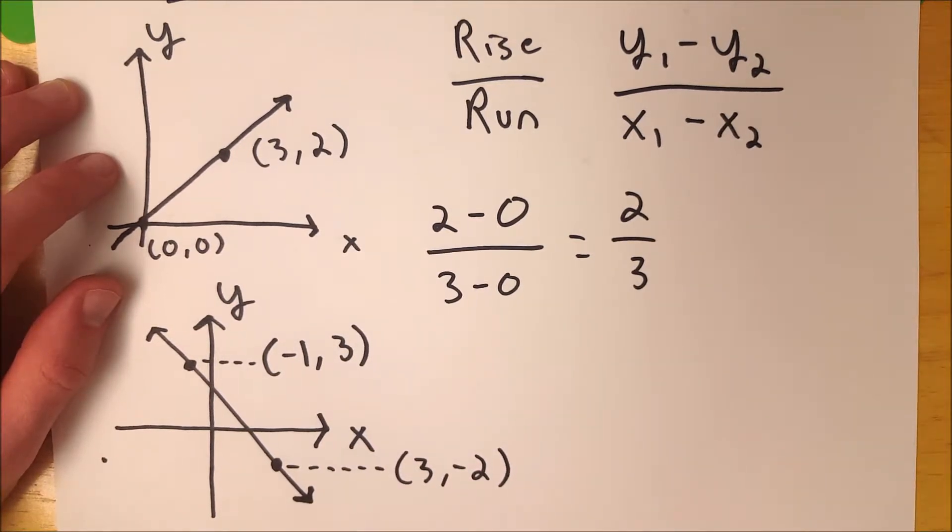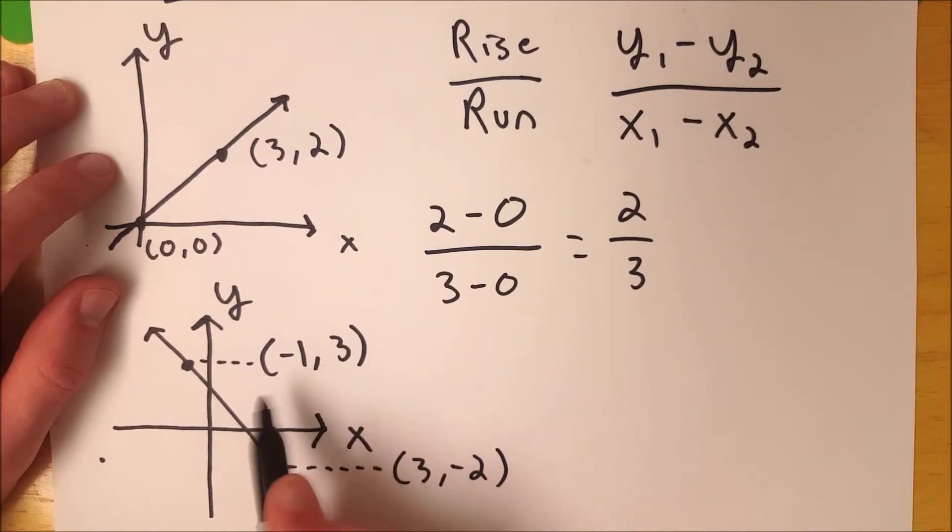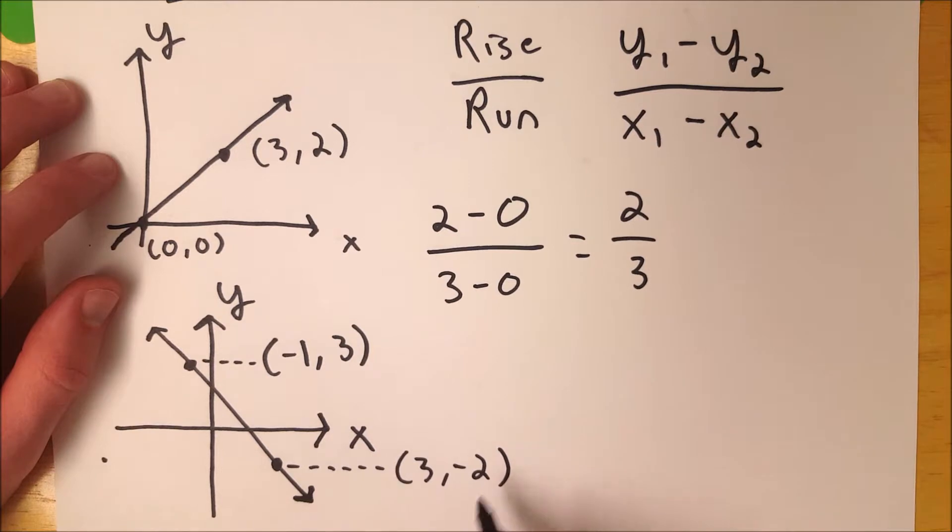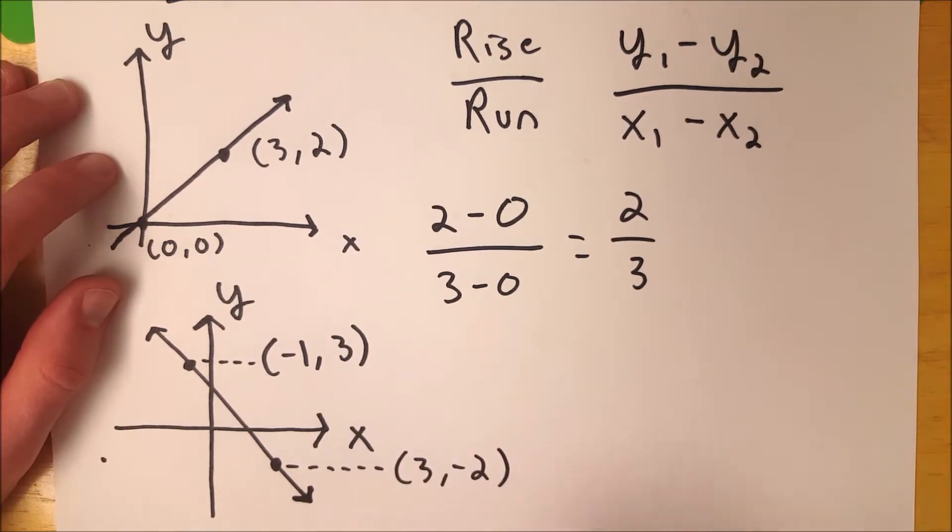So now, what order do we want to go in? Well, if we do y1 minus y2, let's say this is our first point, we'll have 3 minus a negative, which means we'll get a positive number. But then over here, we'll have a negative minus a positive, so we'll get a negative number. If we do it the other way around, we'll have -2 minus positive 3. So either way, we're going to have to work with negatives.